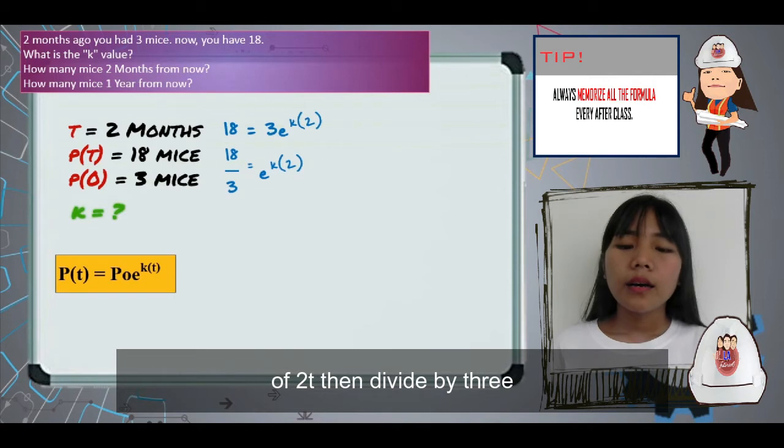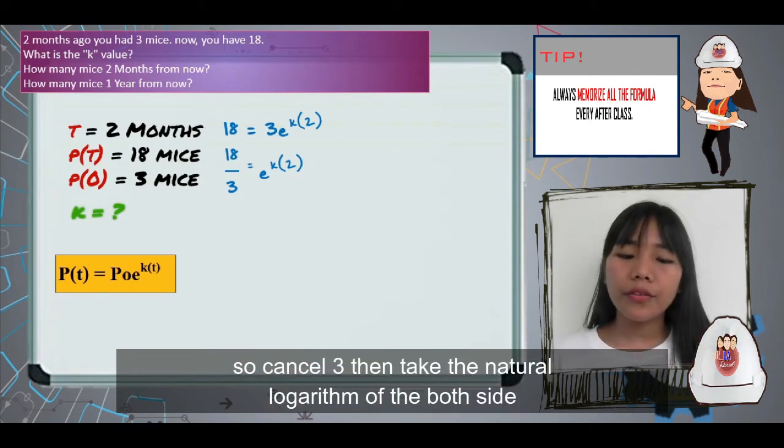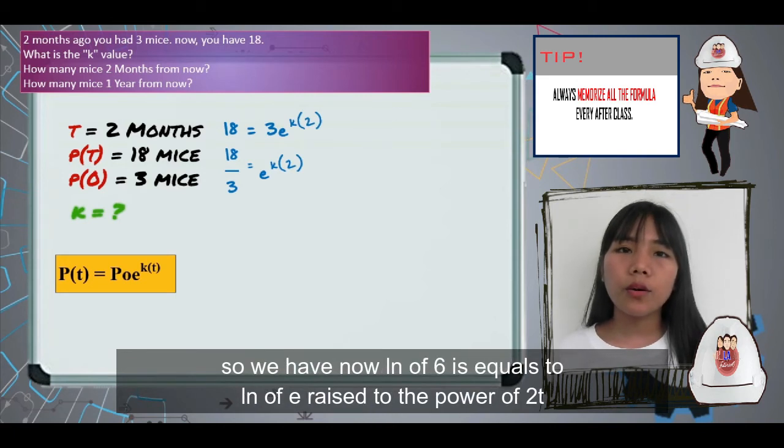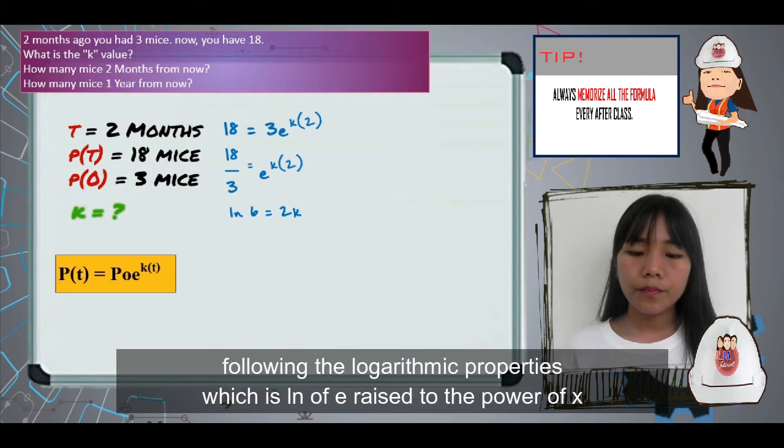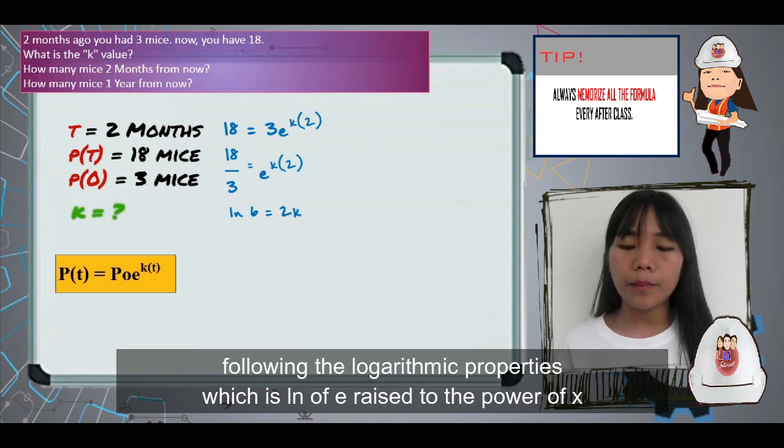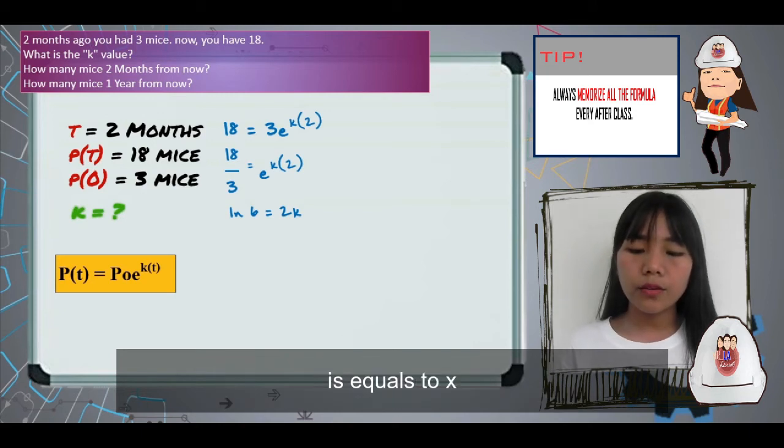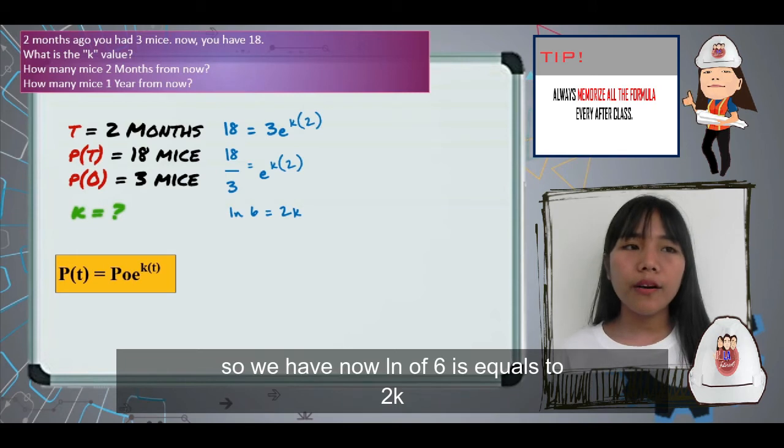We now have 18 divided by 3 equals 3 times e raised to the power of 2k. Then, divide by 3 to cancel. Then, take the natural logarithm of both sides. We now have ln of 6 equals ln of e raised to the power of 2k. So we now have ln of 6 equals 2k.